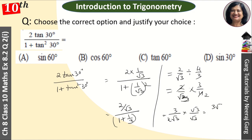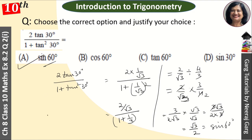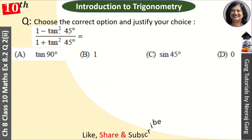Simplify karte hain: 3/3 cancel ho gaya, aur √3 × √3 = 3, toh value aa gayi √3/2. Ab dekhenge ki √3/2 kiske barabar hai — sin 60° ki value hoti hai √3/2. Toh pehle MCQ ka answer hai A: sin 60 degree.